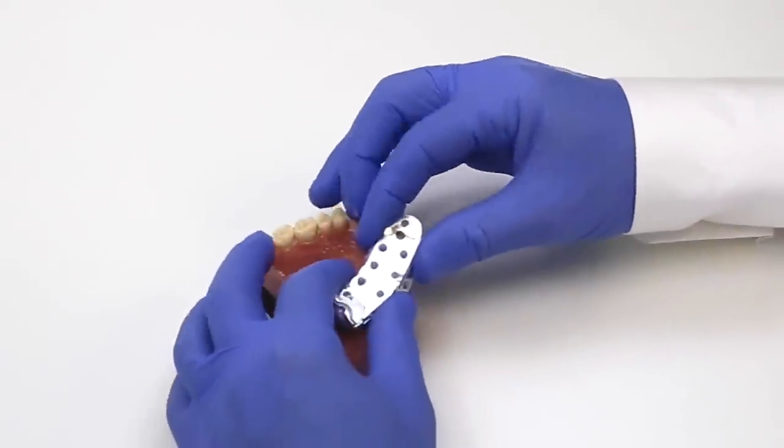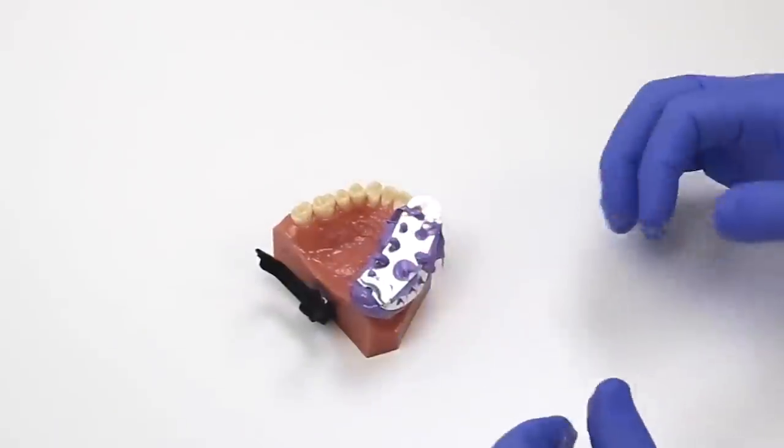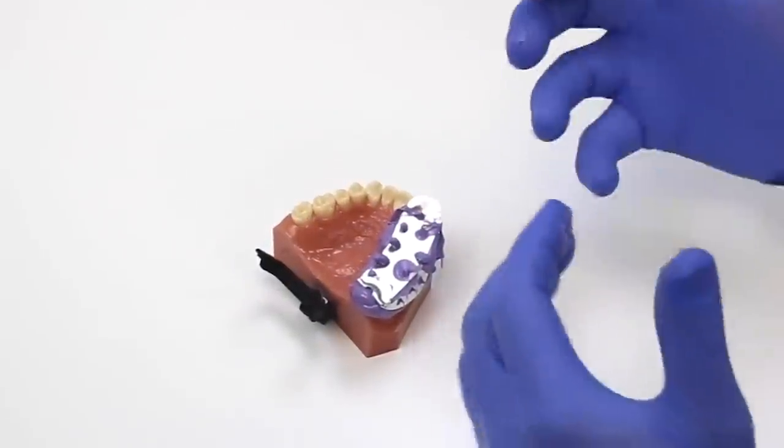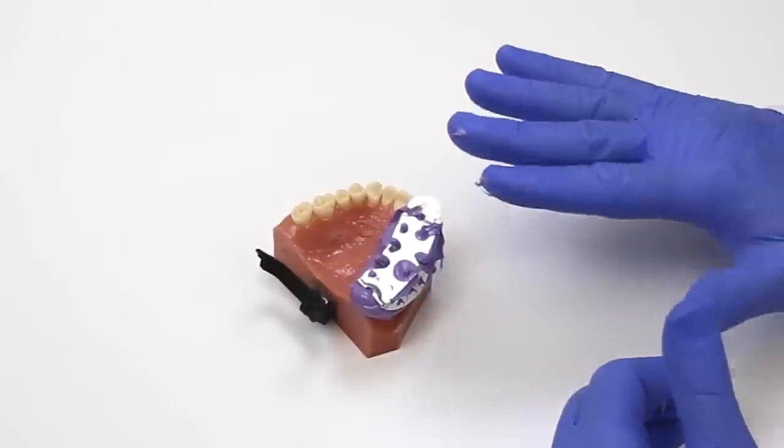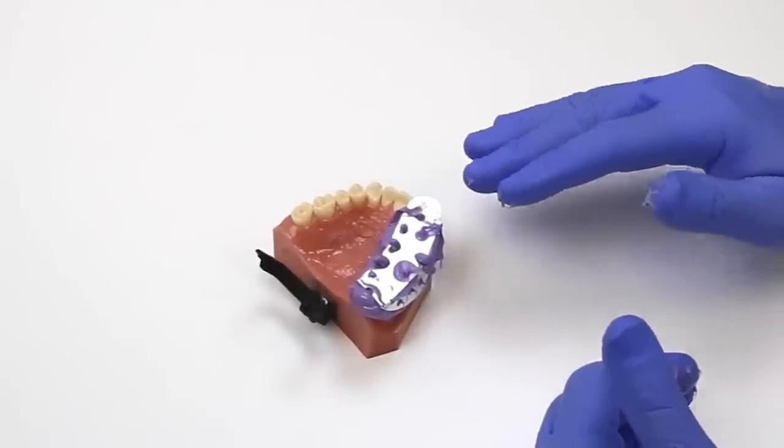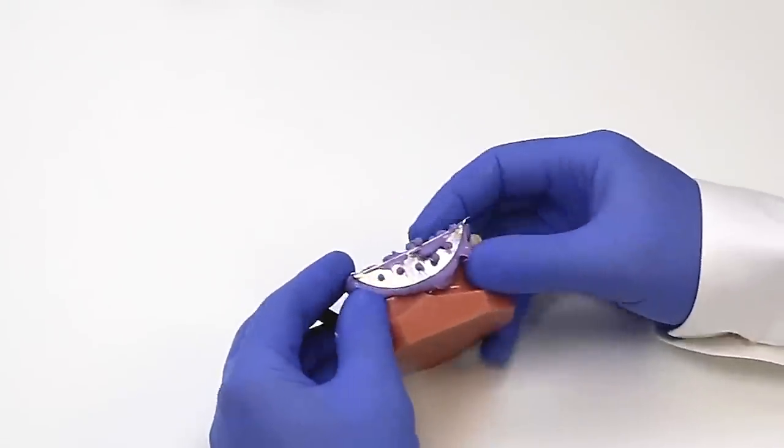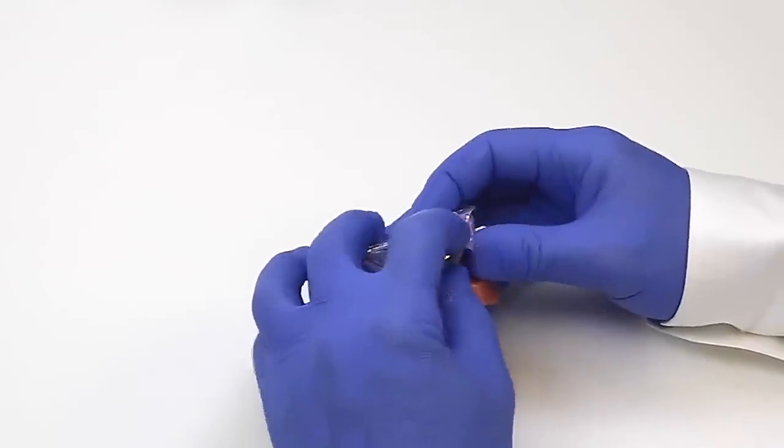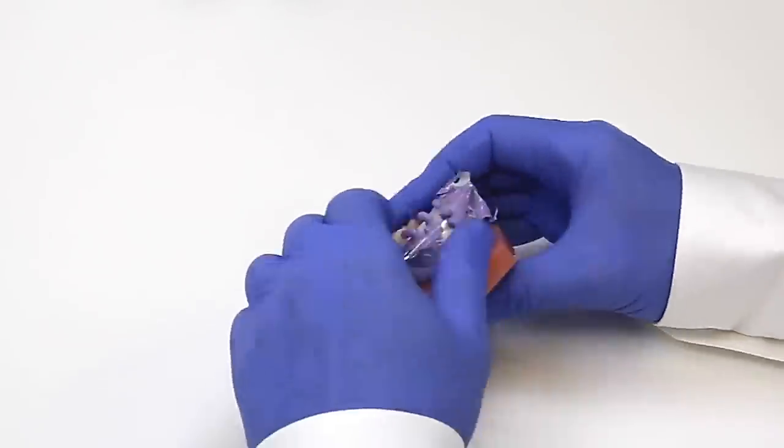And we're just going to place it over the unprepared tooth. And because of the perforations in the temp tray, this is going to lock the material in. It's only going to take 30 seconds intraorally. After 30 seconds, you're going to check it, it's nice and hard. We're going to roll it off.